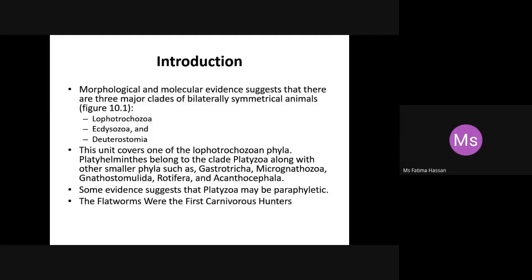According to different clades or categorizations from Kingdom Animalia, there are Deuterostomia, which is one grouping clade. Then there are Lophotrochozoa and Ecdysozoa. I have to tell you that Lophotrochozoa and Ecdysozoa are separate members. What is a characteristic feature? Why do they call it Lophotrochozoa? What are their members? They have lophophore feeding structures.